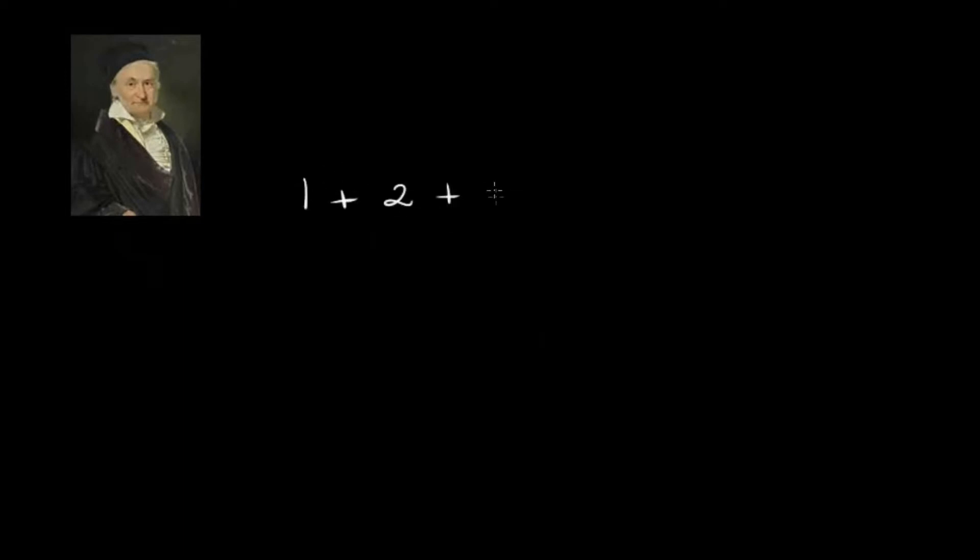This legend starts when Gauss was very young. Him and his classmates were being very noisy, and so his teacher found a way to keep them occupied. She told them to find the result of the sum of all the numbers from 1 to 100 — so she wanted them to solve 1 plus 2 plus 3 plus all the numbers until 100.